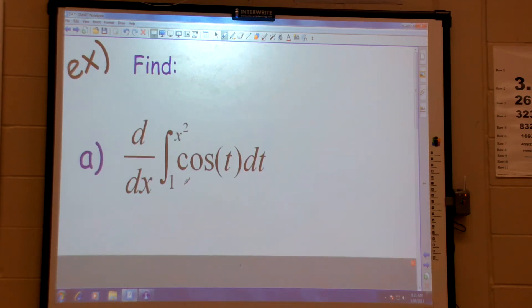Meaning I do the same process and plug it in, it would be cosine of x squared. I do that first. You plug it in, right? But you do have to multiply by the derivative.